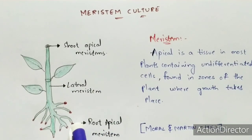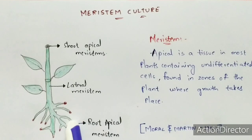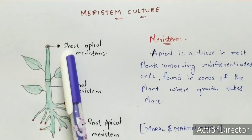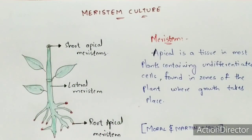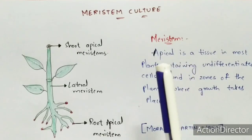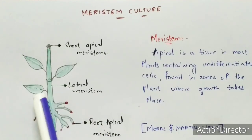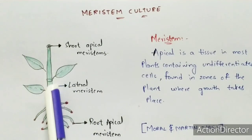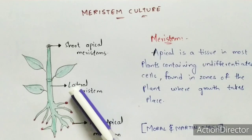The apical meristem is present at the edge region of the root because growth normally occurs at that position. Similarly, the shoot apical meristem is present at the edge of the shoot because growth begins from there. So meristems are present at the region where growth occurs — that is the definition of apical meristem. The lateral meristem is so called because lateral growth also occurs at that region.